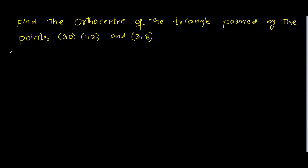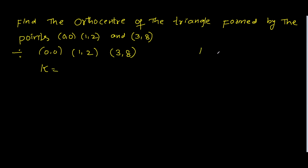Here the given points are: first point is (0, 0), second point is (1, 2), and third point is (3, 8). For the orthocentre, first find the value of k, where k is equal to — write down the points: 1, 2, 3, 8.